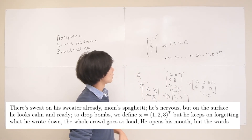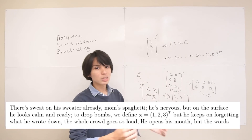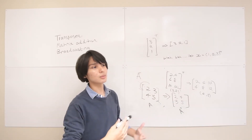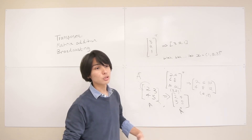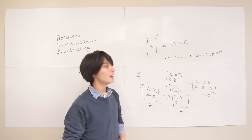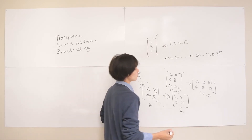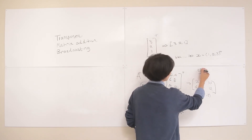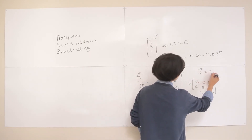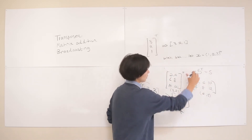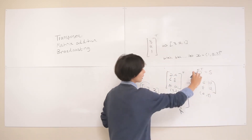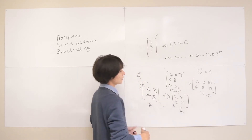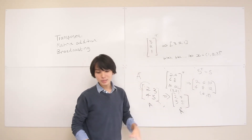Taking the transpose of a scalar you never really need to do, but it sometimes shows up in calculations with matrices. It's good to remember that the transpose of a scalar is just the same thing — because it's symmetrical, flipping it around the main diagonal still gives you 5, for example.